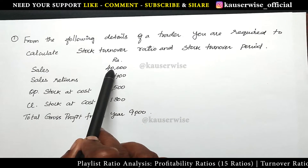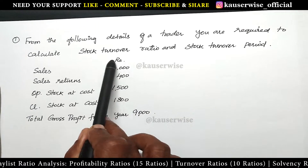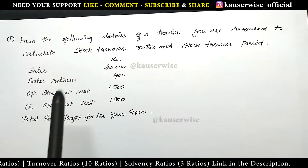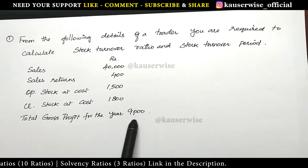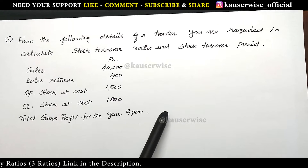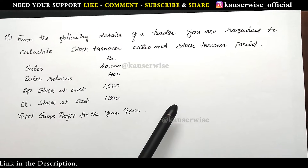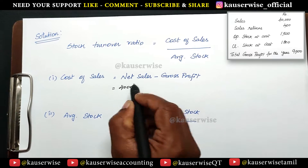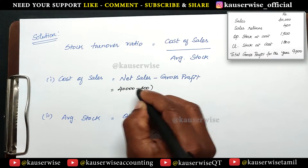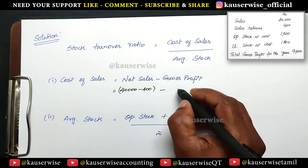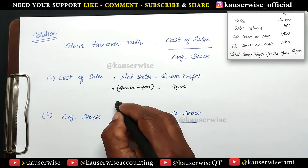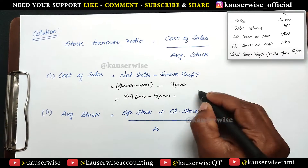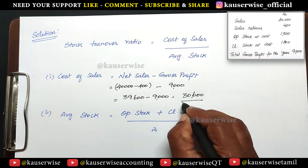They have given sales 40,000, sales returns 400. So 40,000 minus return 400, you will be getting net sales. After finding the net sales, just subtract gross profit for the year 9,000, then you will be getting cost of sales. So the calculation: total sales 40,000 minus sales return 400, you will be getting net sales. After finding this, just subtract gross profit 9,000. So 39,600 minus 9,000 is equal to 30,600. This is cost of sales.